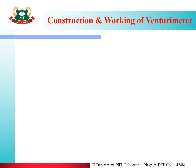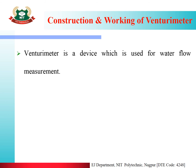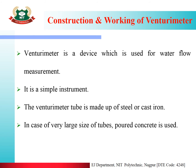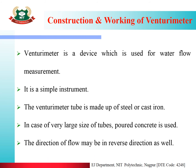Construction and working of venturimeter: the venturimeter is a device used for water flow measurement. It is a simple instrument. The venturimeter tube is made up of steel or cast iron; in case of very large size tubes, poured concrete is used. The direction of flow may be in reverse direction as well.